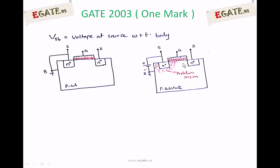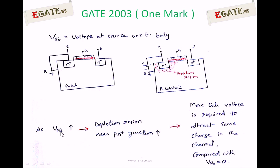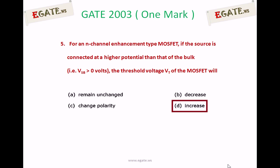Threshold voltage should be applied more to get the same charge as previous with VSB equal to zero. As voltage from source to bulk increases, depletion region near P-N-plus junction increases. Because of that, we must apply more gate voltage to attract same charge in the channel when compared with VSB equal to zero. Threshold voltage increases with VSB not equal to zero, that too VSB should be greater than zero volts. The correct answer for the question is D, increases. Thank you.